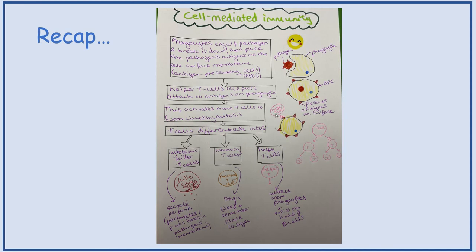Then, helper T-cell receptors will attach to the antigens on the phagocyte. And this activates more T-cells to form clones by mitosis. And then T-cells will differentiate into cytotoxic killer T-cells.